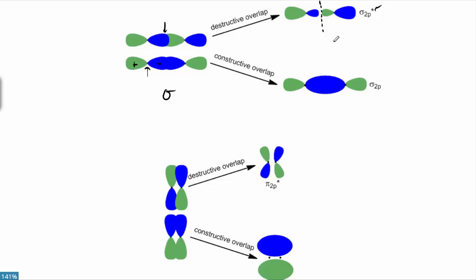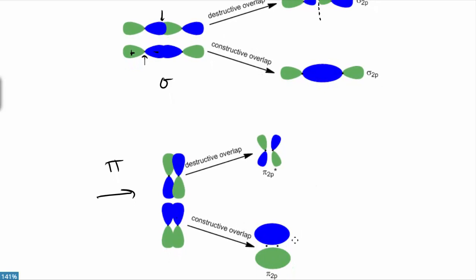You're only going to have one p orbital actually oriented pointing towards each other when two atoms come together. The others, if they're going to overlap, are going to have to overlap in a side-to-side fashion — and we call that pi overlap. When pi overlap happens, it can happen in phase, as it does in the lower set, creating a giant molecular orbital we call pi 2p. However, when destructive overlap occurs, right where they overlapped — right down the middle of our diagram — it creates another node. This is again higher energy, and that's the antibonding pi 2p star.